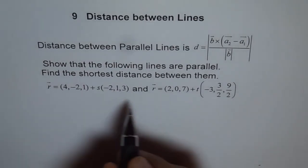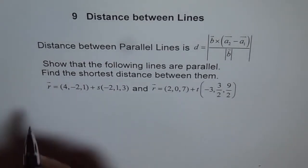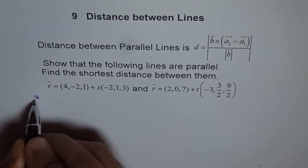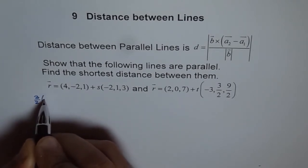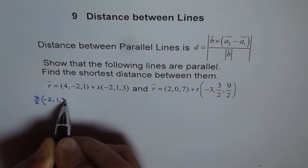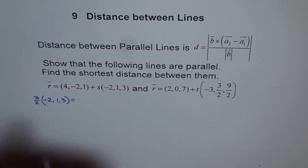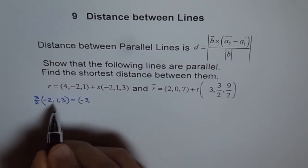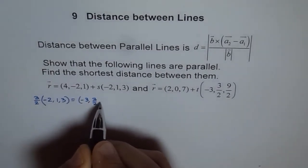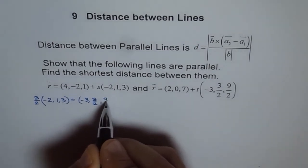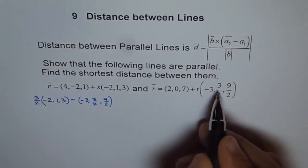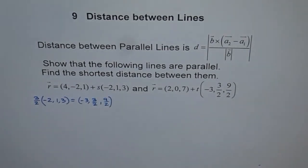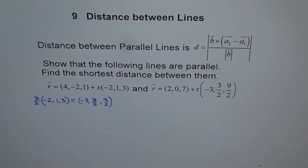So let's see what 3 over 2 times this gives us. We have 3 over 2 times minus 2, 1, and 3. So 3 over 2 times this gives us minus 3, and that is 3 over 2, and this is 9 over 2. Clearly, it is a scalar multiple — it's 3 over 2 times the first vector. This means that the lines are parallel.